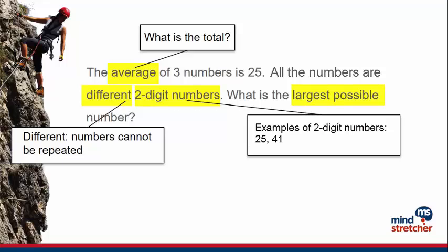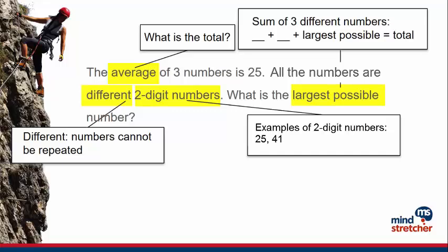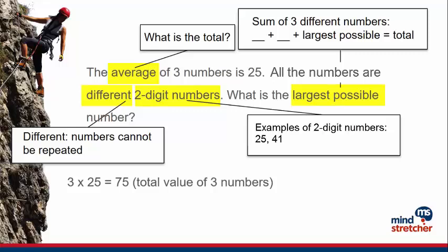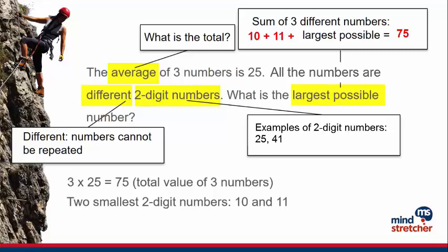In order to find the largest possible number, we need to know the other 2 numbers. They must be the smallest 2-digit number and the second smallest 2-digit number. All 3 numbers, when added together, will give us the total. We take 3 times 25 to get 75. The 2 smallest 2-digit numbers are 10 and 11. We take the sum of the 2 smallest numbers and subtract it from 75. The correct answer is 54.